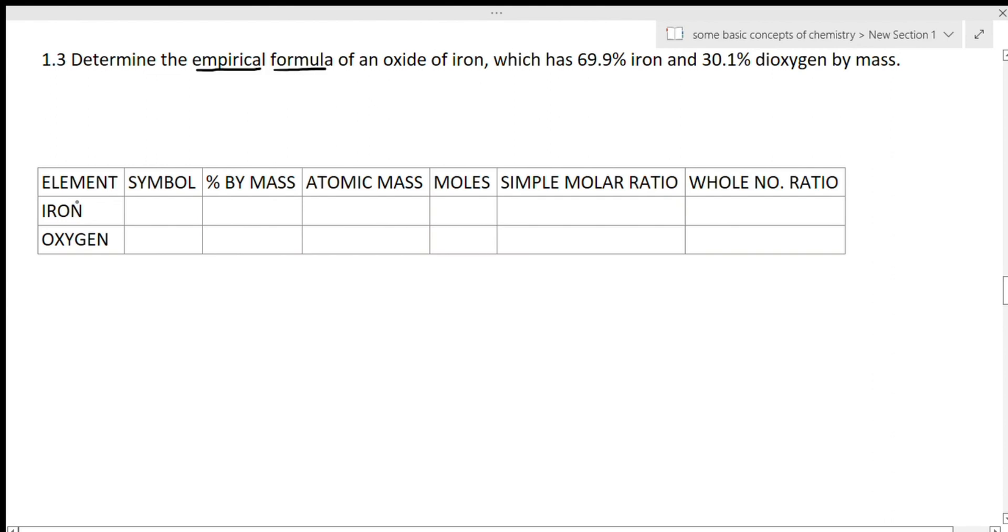Iron's symbol is Fe and oxygen's symbol is O. Percentage by mass given is: iron is 69.9% and oxygen is 30.1%. Atomic mass of iron is 55.85, in exam you can take 55, no need to be so accurate. And then atomic mass of oxygen is 16.